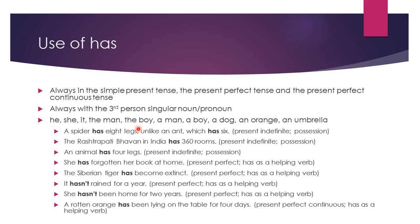'A spider has eight legs' — this sentence is in the present indefinite tense and we are using 'has' as the main verb to mean that it possesses something. Similarly, 'The Rashtrapati Bhavan in India has...' — again present indefinite, used to mean possession. In the fourth example, 'has' has been used as an auxiliary verb or helping verb — for example, 'has forgotten,' where the main verb is 'forgotten,' the past participle of 'forget.' 'The Siberian tiger has become' — 'has' is the helping verb and 'become' is the main verb.